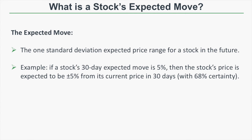So what is a stock's expected move? The expected move is the one standard deviation expected price range for a stock in the future. For example, if a stock's 30-day expected move is 5%, then the stock's price is expected to be plus or minus 5% from its current price in 30 days. Since this is a one standard deviation range, the expected move is the 68% probability range for a stock over a certain time period.